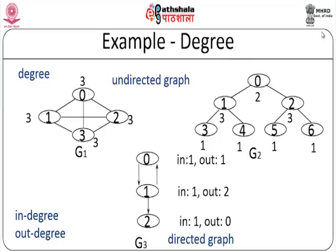In an example undirected graph, nodes 0, 1, 2, and 3 each have degree 3. In a directed graph g3, vertex 0 has in-degree 1 and out-degree 1; vertex 1 has in-degree 1 and out-degree 2; vertex 2 has in-degree 1 and out-degree 0. The terms in-degree and out-degree are associated only with directed graphs.